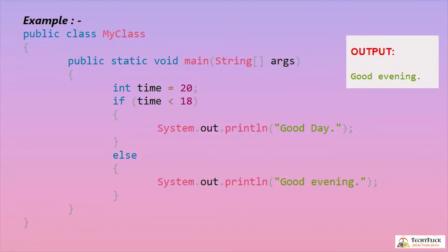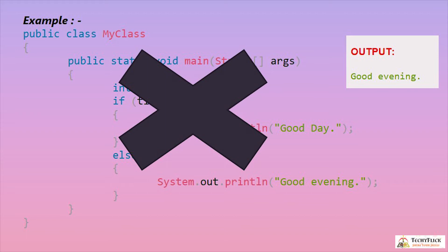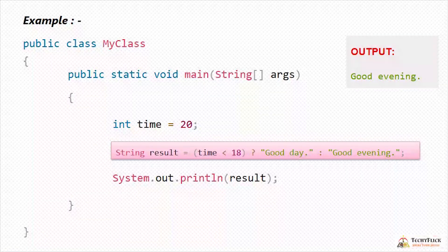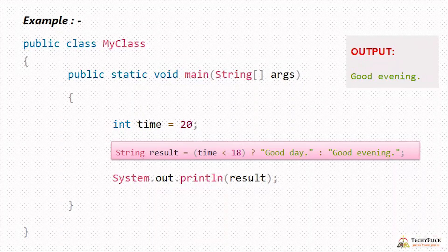In the ternary operator example, time is 20. We check if time is less than 18. If true, we print 'good day'; if false, we print 'good evening'. We declare: String result = (time < 18) ? "good day" : "good evening". Since 20 is not less than 18, result is 'good evening', printed in a single line.